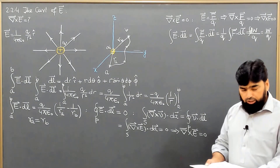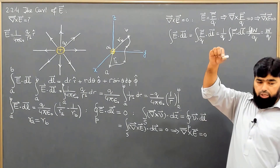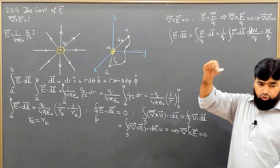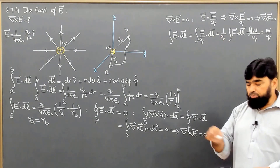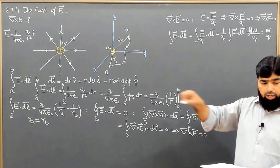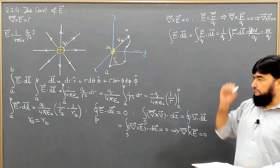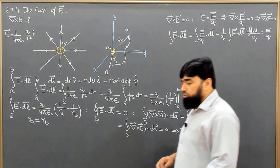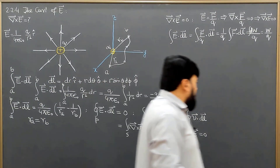The gravitational field is a conservative field. If I raise an object to a point, the potential energy stored is mgh — it only depends on the height. It does not matter if you move it this way or any other way to reach that point. The end points matter, the height matters, and that is the reason we call such a field a conservative field.